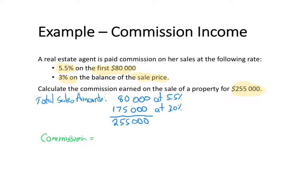The commission is calculated at $80,000 times 5.5% (which is 0.055), plus $175,000 times 0.03. That works out to be a total commission of $9,650. As there is no retainer involved in this calculation, we have our answer — the commission earned on the property is $9,650.